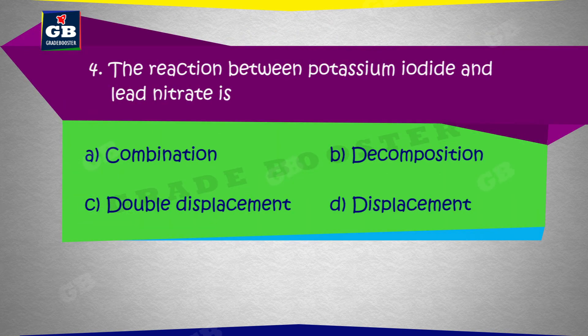The reaction between potassium iodide and lead nitrate is: A. Combination, B. Decomposition, C. Double displacement, D. Displacement.